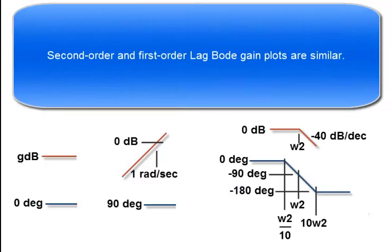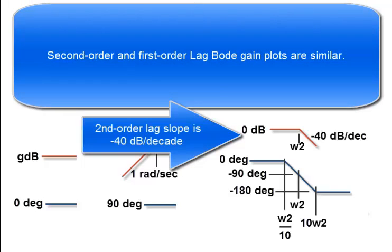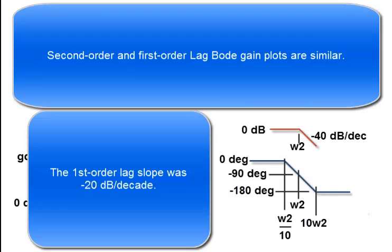Second order and first order lag Bode plot gains are similar. Second order lag slope is negative 40 dB per decade, and the first order lag slope was negative 20 dB per decade.